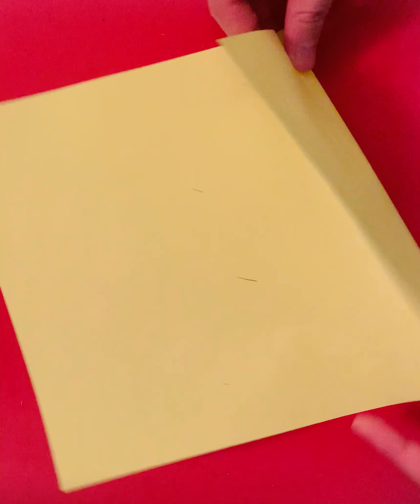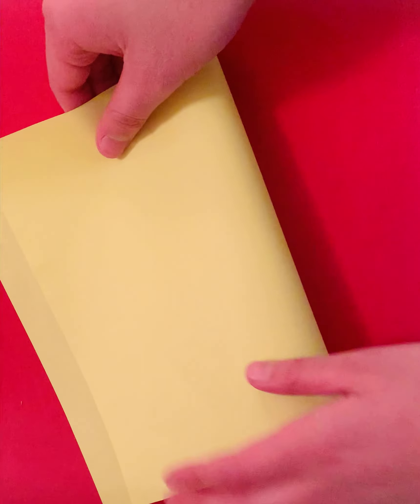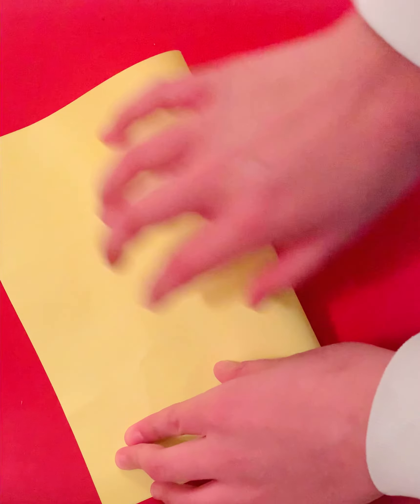So what we're going to do is we're going to take a piece of paper and we are going to fold it the hamburger style and we're going to cut it.